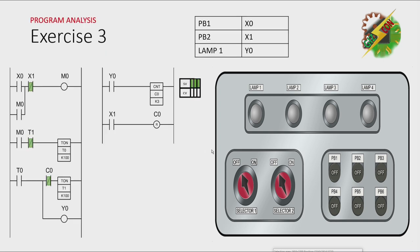This will be my answer to this exercise. Let's have our program analysis. Let's press PB1. And that will make M0 turn on here. And the only way to turn off M0 is by pressing PB2.